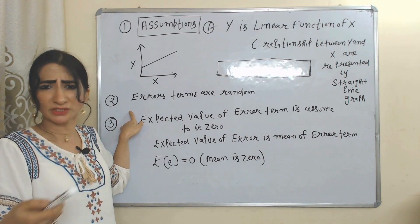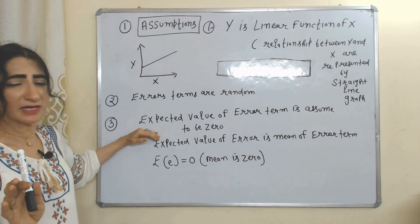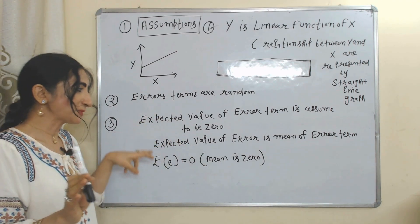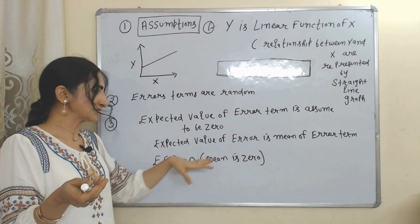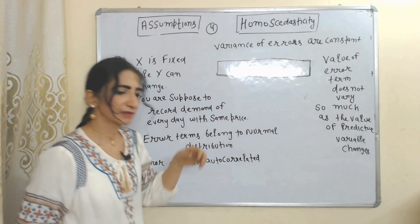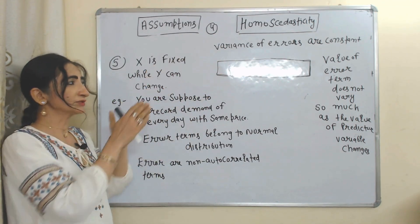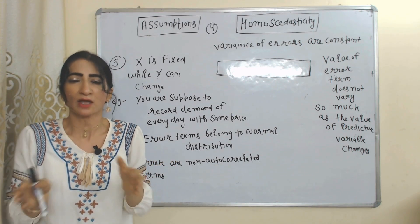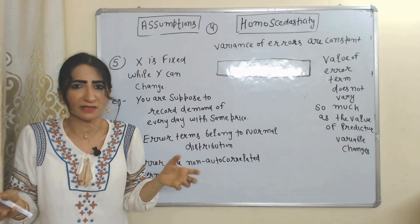Second, error terms are random — the value of the error term can be positive, negative, or even zero by chance. Third, the expected value of the error term is assumed to be zero. The expected value of the error term means the mean of the error term, so the mean of error terms equals zero.